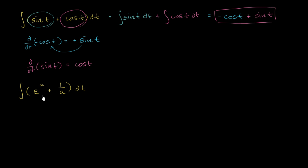Now let's tackle the next one. Actually, this is a mistake — this should be with respect to a. Let me clean this up. This should be a dA. If we were taking this with respect to t, we would treat all of these things as just constants, but I don't want to confuse you right now. This is going to be dA — that's what we are integrating or taking the antiderivative with respect to.